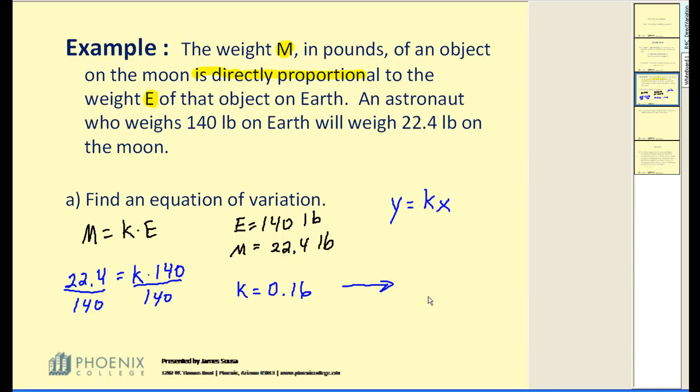Which would give us our equation of variation as the weight on the moon is equal to 0.16 times the weight on earth. This is what we call our equation of variation. Our constant of variation would be 0.16.